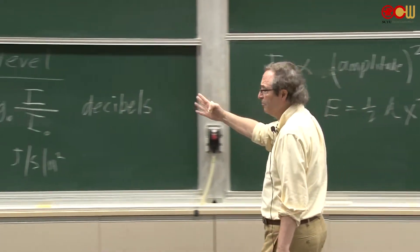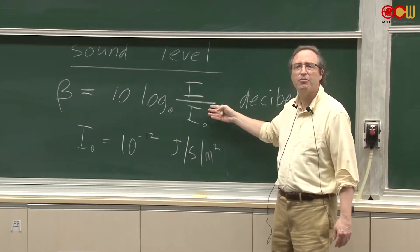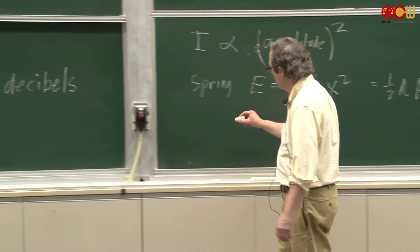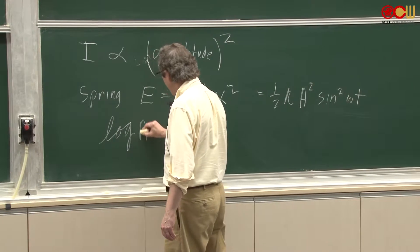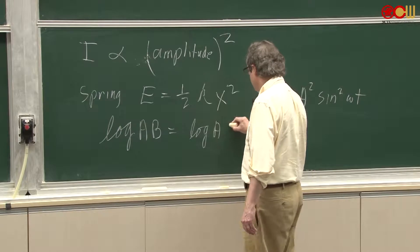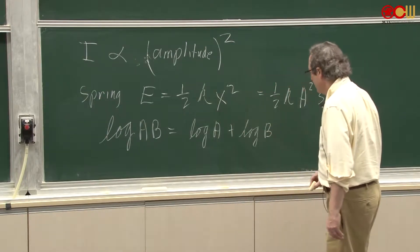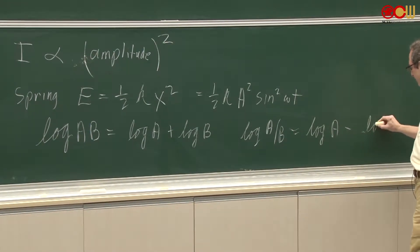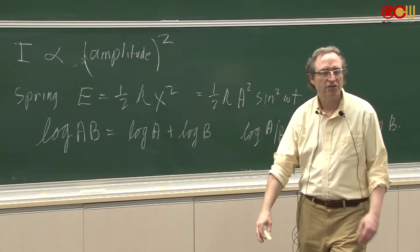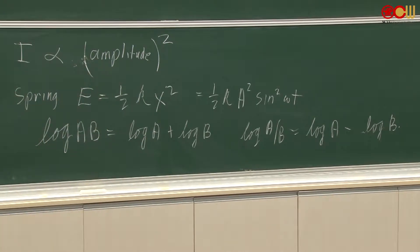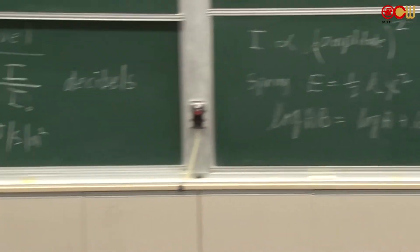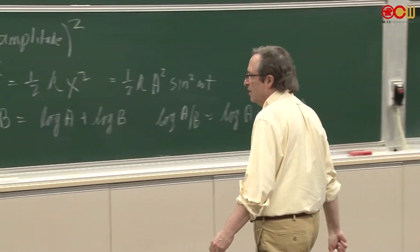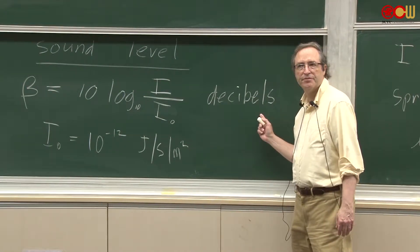So logarithms are very important. When we talk about thermodynamics, or more properly statistical mechanics, we'll see logarithms again. They have some good properties that you probably know, like the log of A times B equals the log of A plus the log of B. Or the log of A over B equals the log of A minus the log of B. So those are some properties that are useful. So this is what's called the sound level. So a very big increase in intensities only leads to a relatively small change in the sound level in terms of decibels.